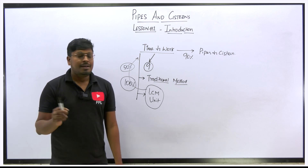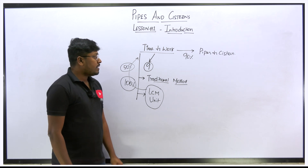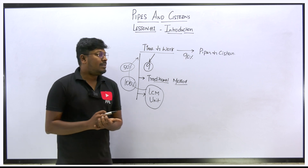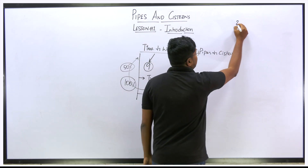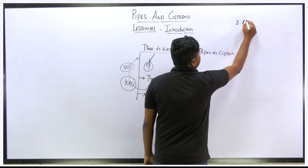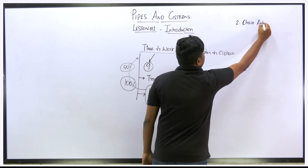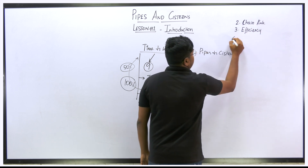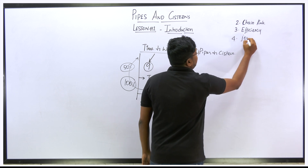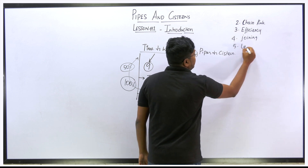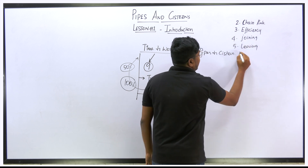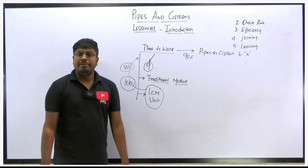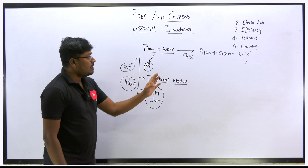Try to learn any one method 100% and then start solving questions in Pipes and Cisterns. In Time and Work, we learned: lesson one — Introduction; lesson two — Chain Rule; lesson three — Efficiency; lesson four — Joining concept; lesson five — Leaving concept; lesson six — X person, Y person. Similarly, I have posted nine videos on Time and Work, and in Pipes and Cisterns, everything will be the same.